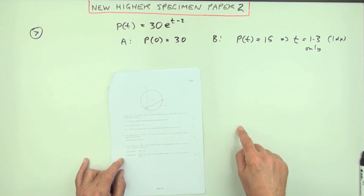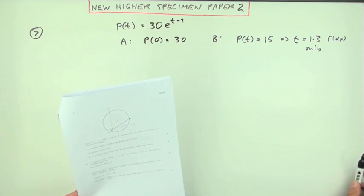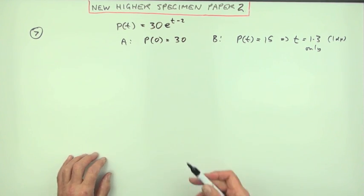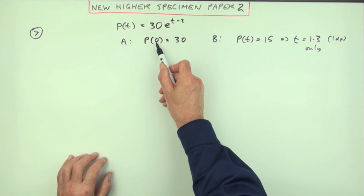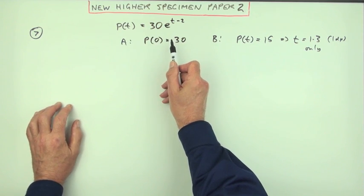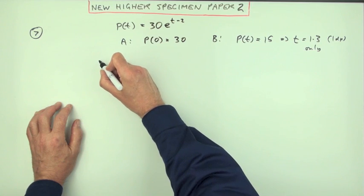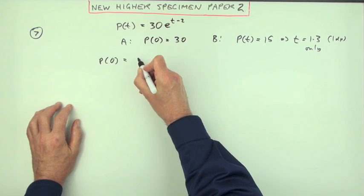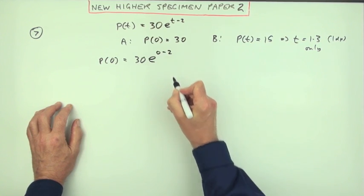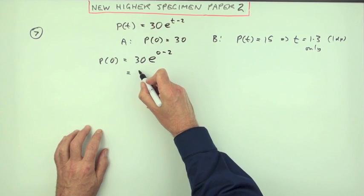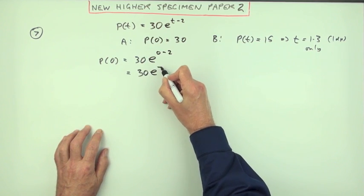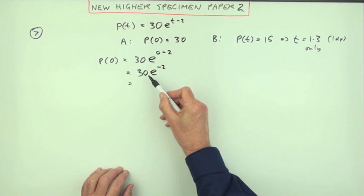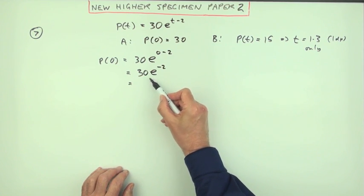Well statement A is the value of this when you put zero in for t equal to 30. That's fairly straightforward. P(0) would be 30 times e to the zero minus two, so that's 30e to the negative two. That's like 30 divided by e squared.